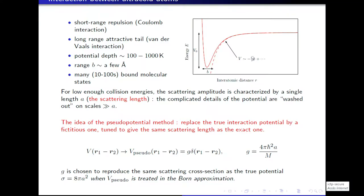Typically these potentials at very short range can be very strong, with depths that can be up to several thousand kelvins — exceedingly higher than the energies we discuss for cold atoms. But this happens at very short range, typically on an atomic scale, so B here, the range, is a few angstroms only. These wells are deep, so they can support many bound states, which correspond to diatomic molecules that you can form with two like atoms that collide.